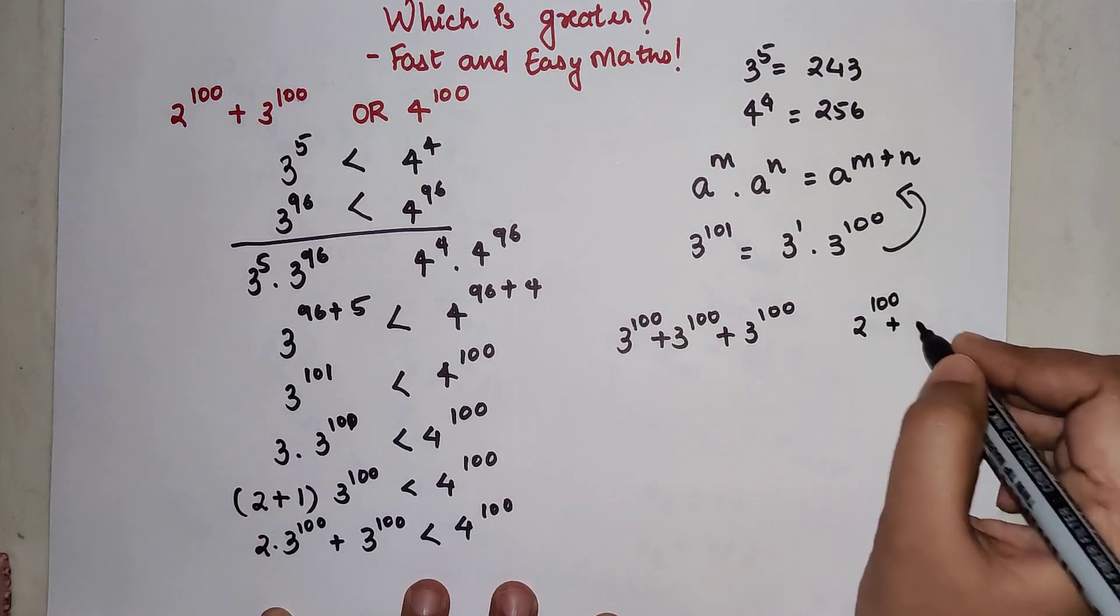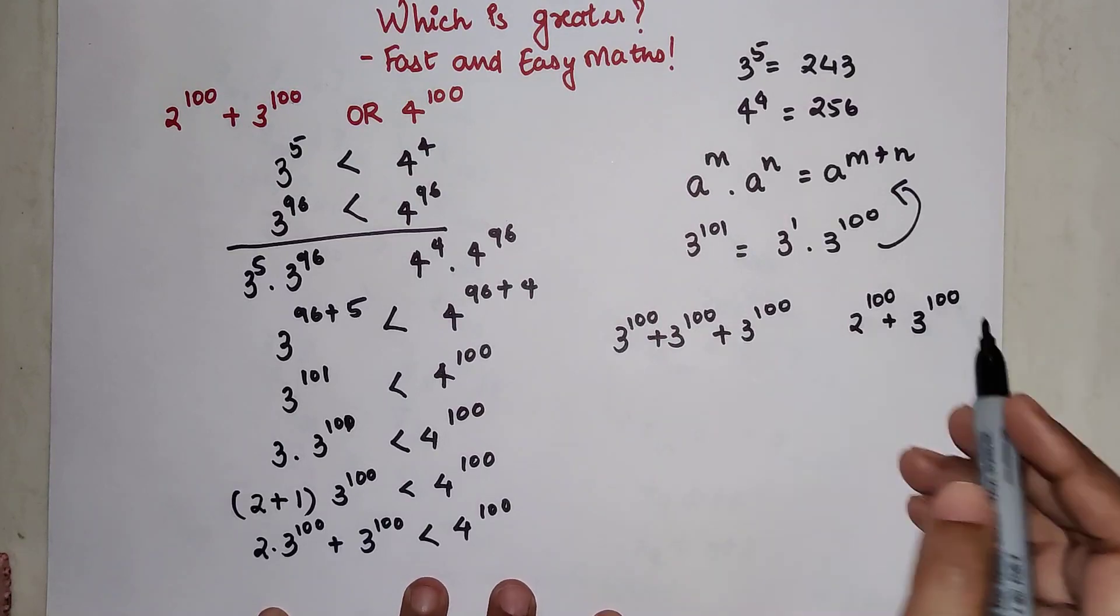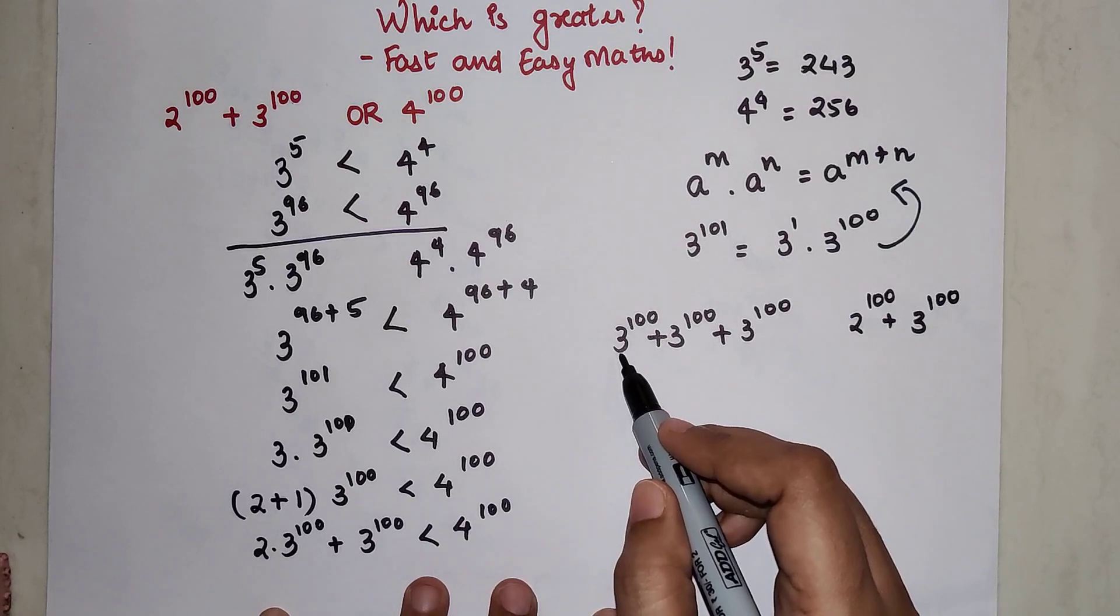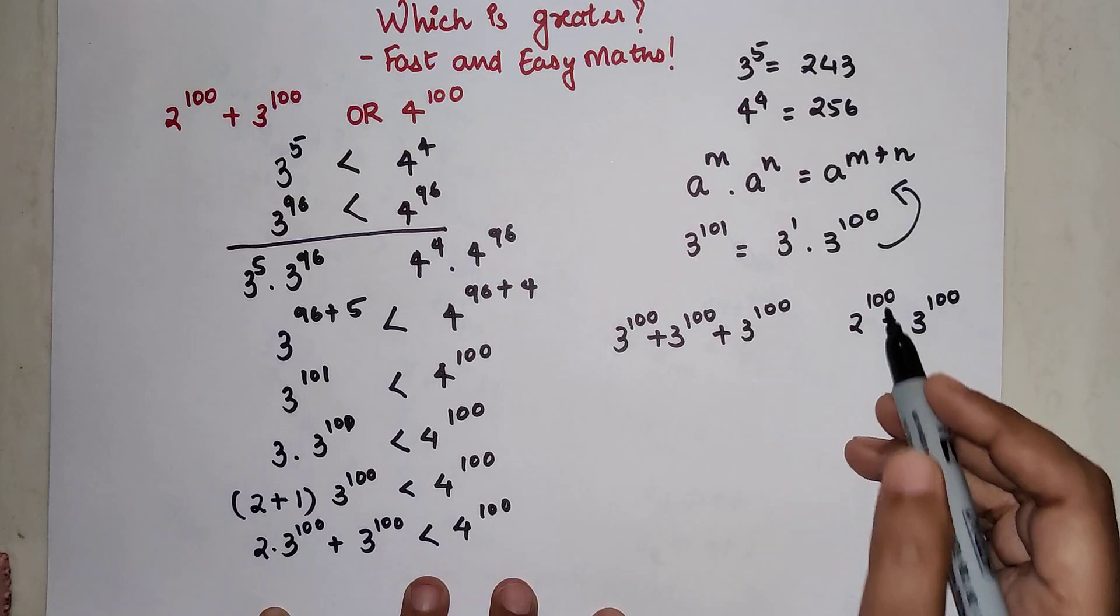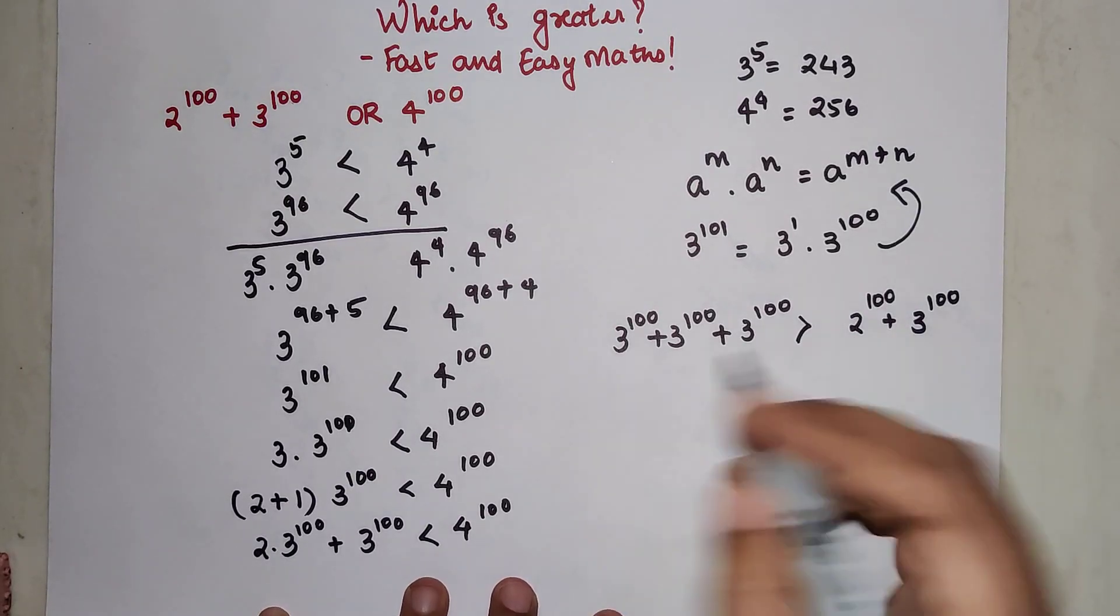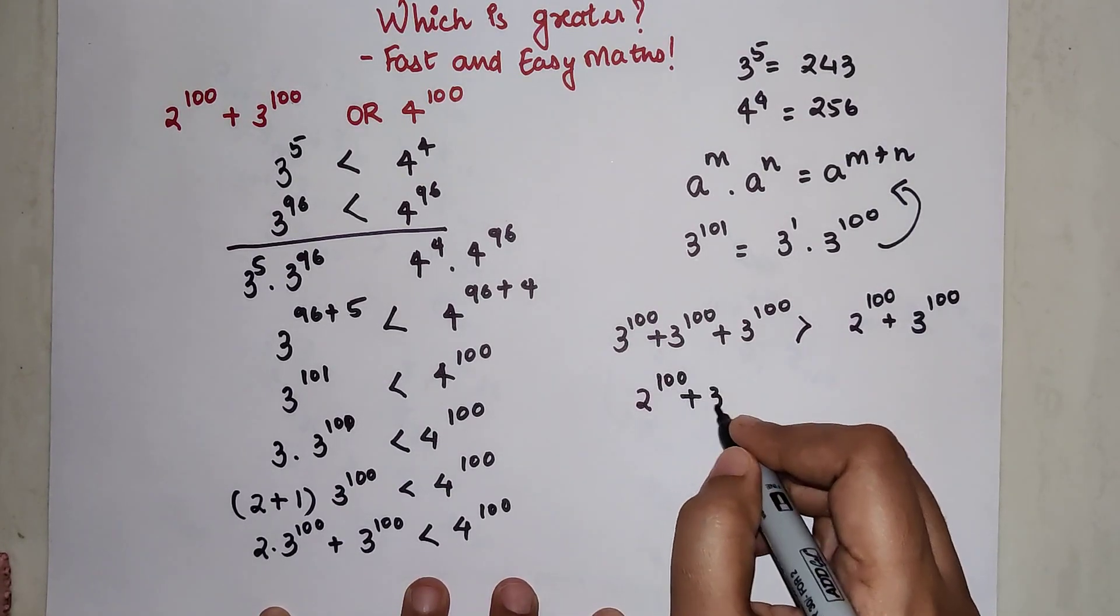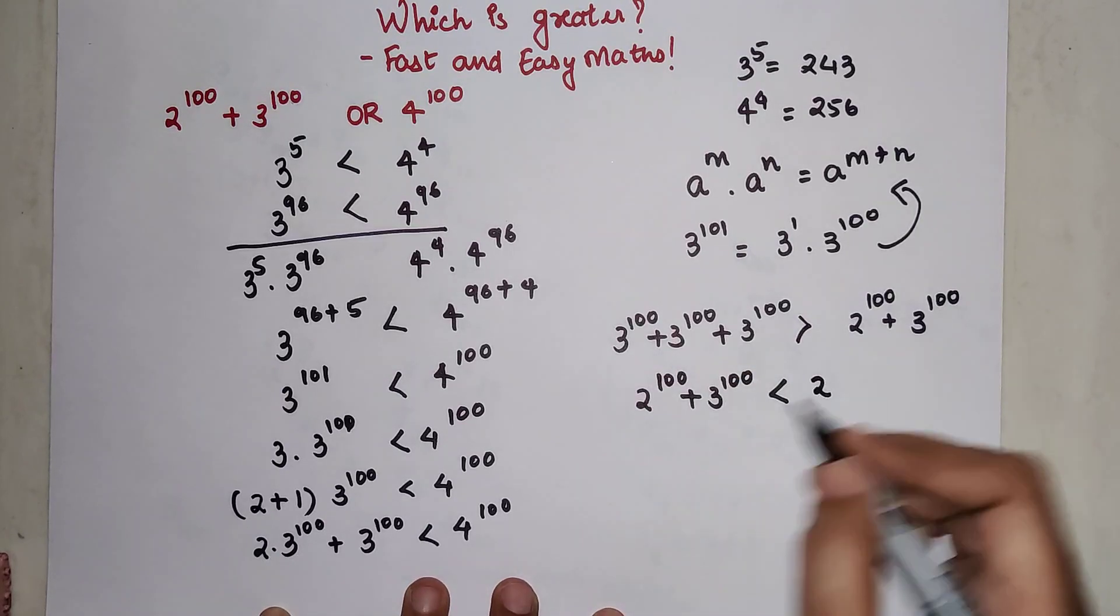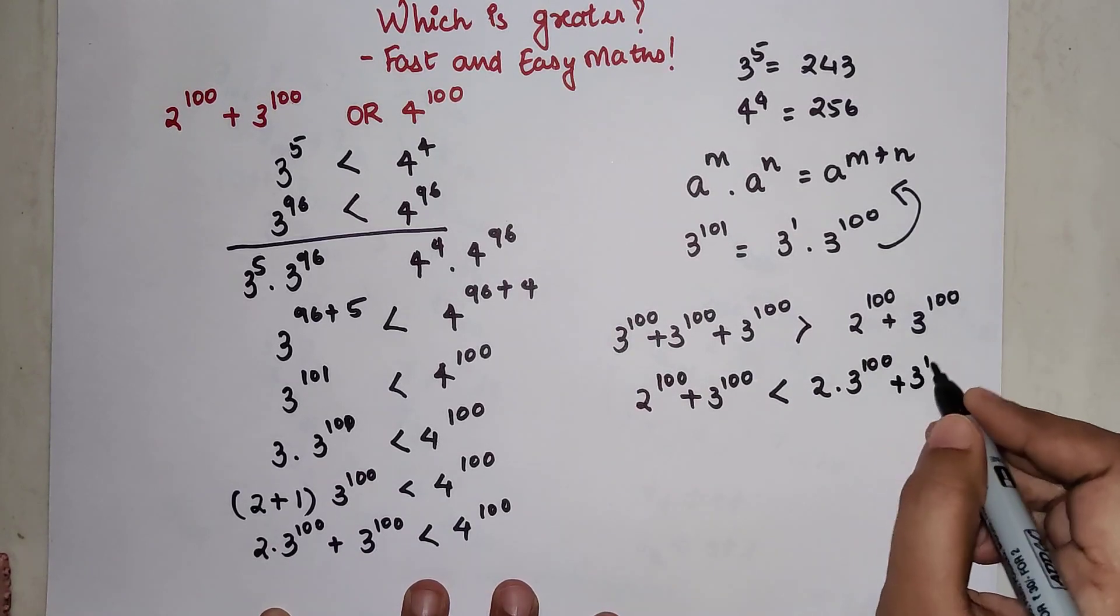We have 2^100 + 3^100. Now understand, if we even try to compare, this will cancel out, but there are still 3^100 and one more 3^100 that we need to compare with 2^100. So I can say definitely this is going to be greater. If you want to write this properly, I can say 2^100 + 3^100 will be smaller than 2 × 3^100 + 3^100.